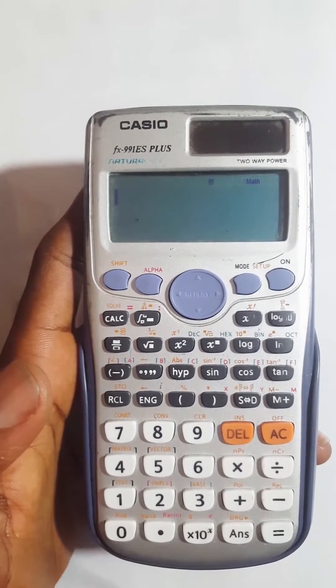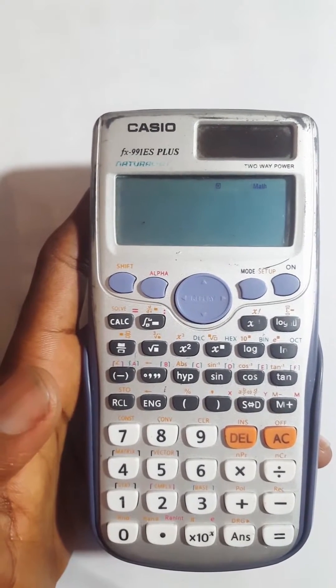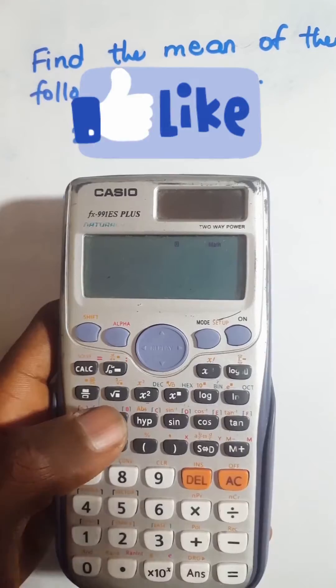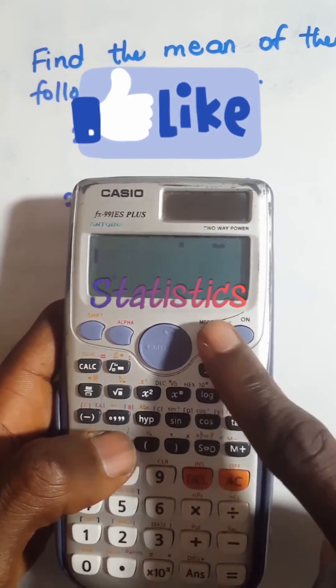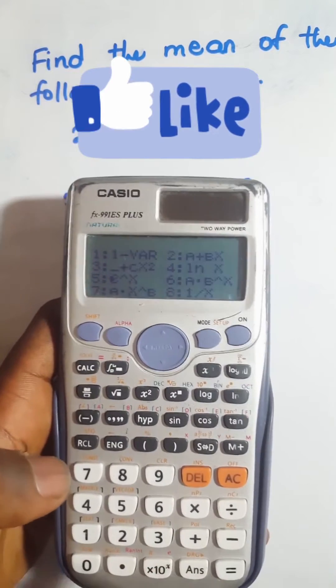In this video we are going to find the mean from a frequency distribution table using your calculator. You switch your mode to stat, so you press mode then you press 3 which has the stat.